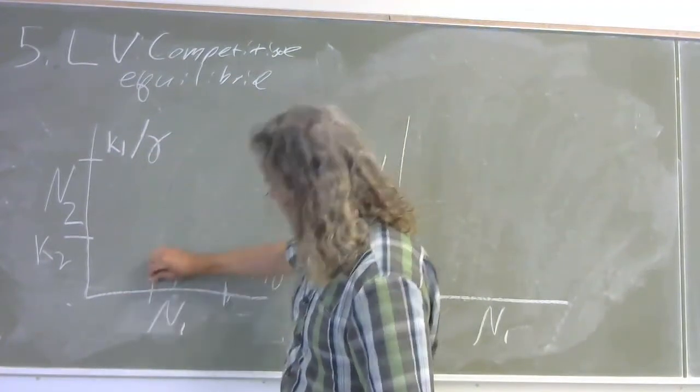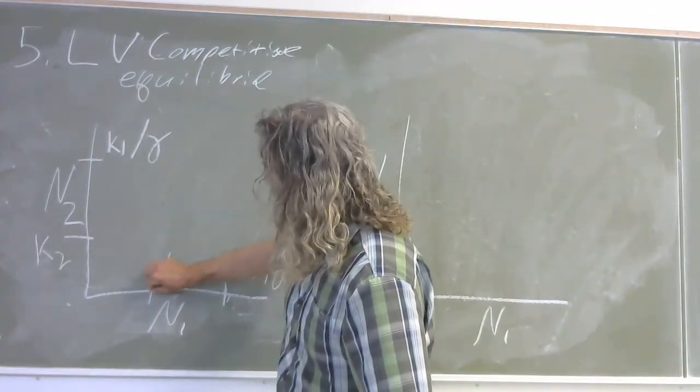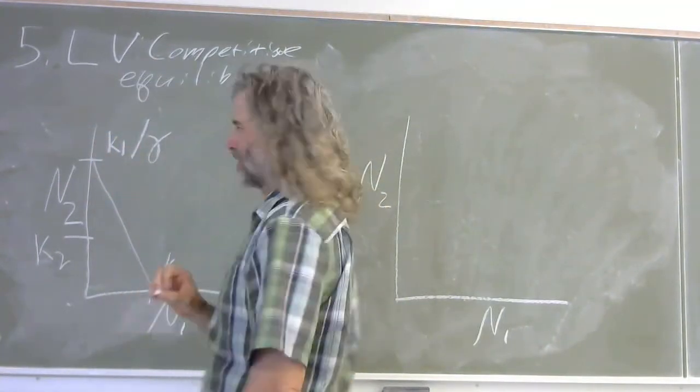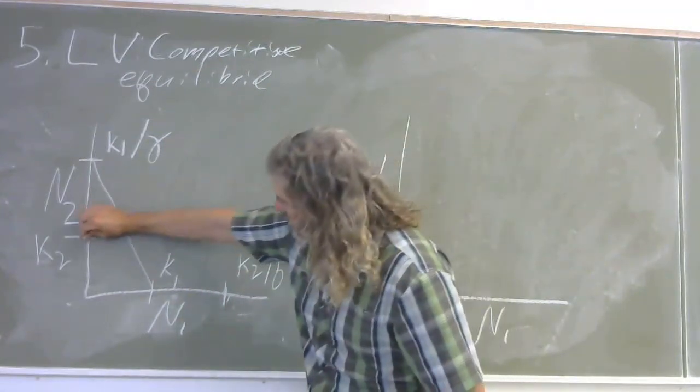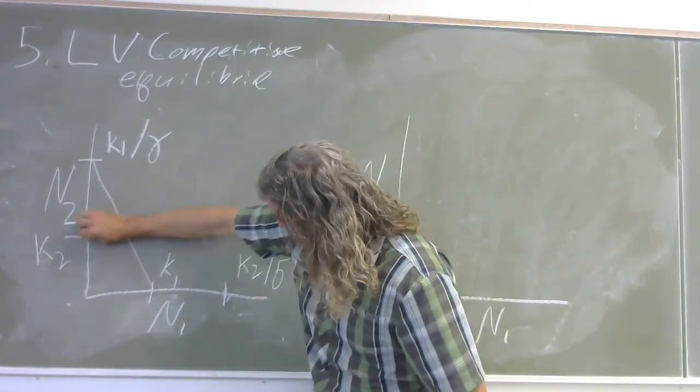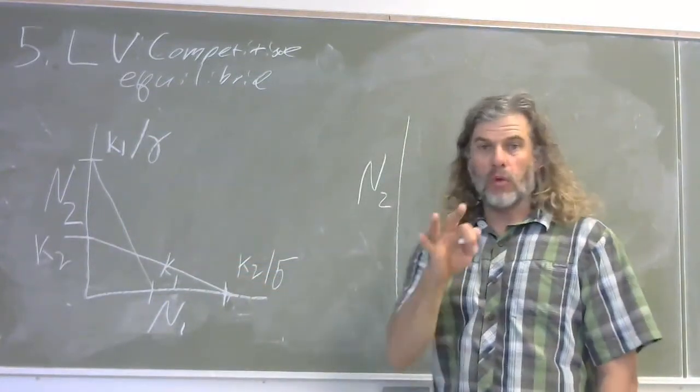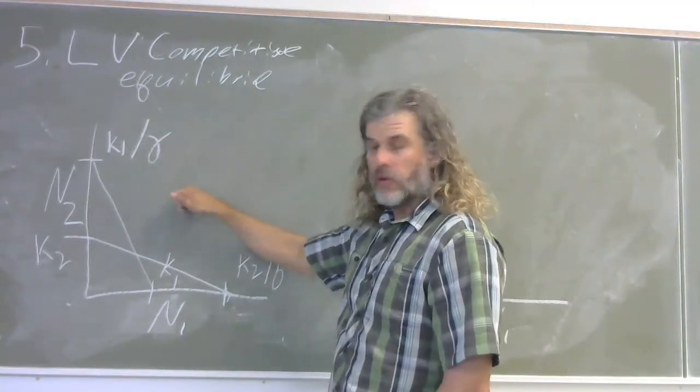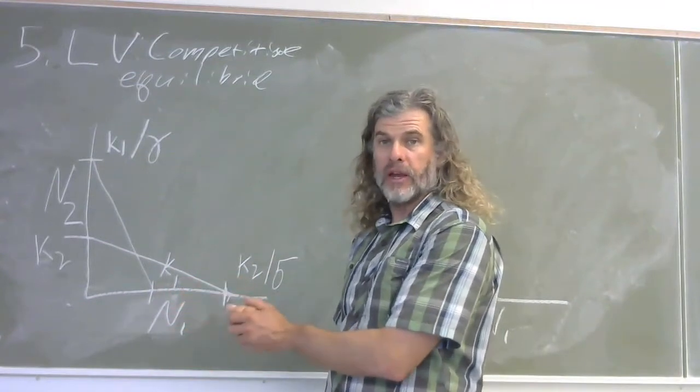So species 1, we're going from the intraspecific species limit to its interspecific species limit. And then the corresponding relationship for species 2. So it looks like this. Let's think about this phase space. When we're above the isoclines up here in this quadrant, this has four quadrants, just like the predator-prey dynamics.